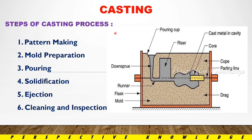This is the product. The casting process involves 6 main steps: pattern making, mold preparation, pouring, solidification, ejection, and cleaning and inspection. Casting has these main steps, and we will explain each process in detail.